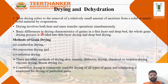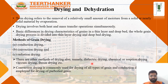The basic difference in drying characteristics involves thin layer and deep bed drying of whole grain. The drying process is divided into thin layer drying and deep bed drying. Methods of grain drying include conduction, convection, and radiation drying, among many other methods.